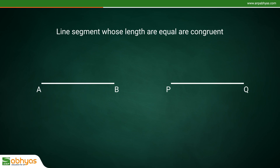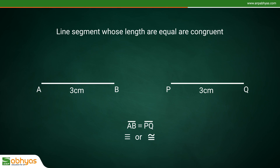Line segments whose lengths are equal are congruent. Segment AB is congruent to segment BQ. The symbol for 'is congruent to' means segment AB is congruent to segment BQ.